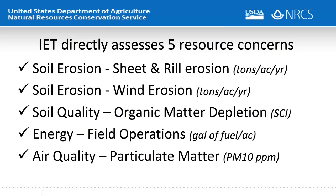IET directly assesses five of the 44 resource concerns: soil erosion — sheet and rill erosion in tons per acre per year; soil erosion — wind erosion in tons per acre per year; soil quality — organic matter depletion in the form of soil conditioning index; and energy field operations in the form of gallons of fuel per acre.